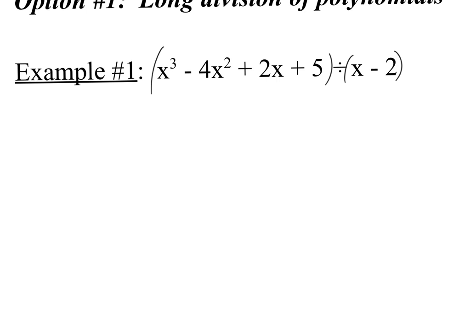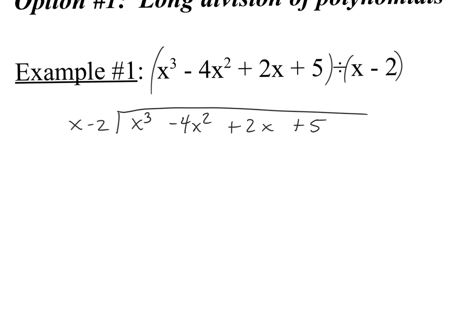Just like before with 102 divided by 8, the polynomial goes underneath the long division bar: x³ minus 4x² plus 2x plus 5. And x minus 2 goes on the left. Note that this is a nice, neat problem because we have degree 3, 2, 1, and 0 terms. If you were missing a term — say there was no 2x — you'd want to put 0x as a placeholder to stay organized.